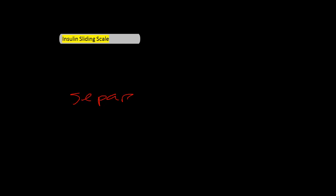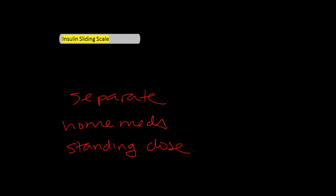After putting a patient on a sliding scale, you should check daily to see how much insulin off the sliding scale protocol the patient has required. Remember, this sliding scale is separate from the current home meds they're on or any standing dose of insulin. You should consider a more resistant scale if the patient requires 8 to 10 units in addition to their current insulin based on this sliding scale.